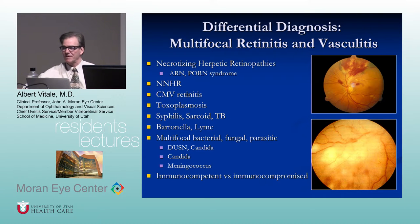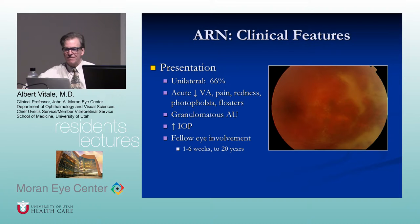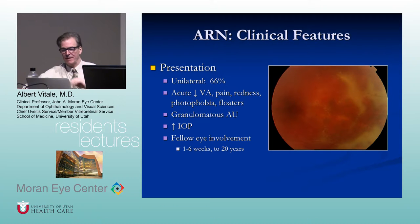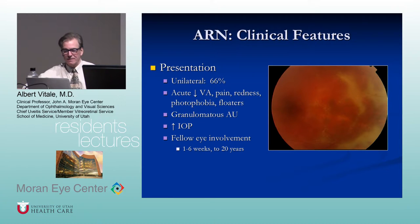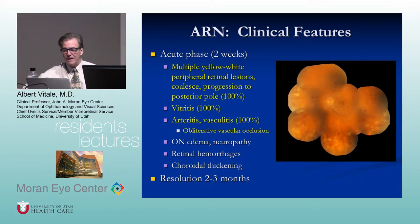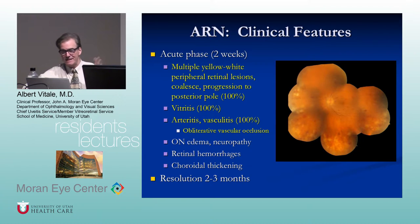Clinical features of ARN: it usually presents two-thirds of the time unilaterally but can be bilateral (so-called BARN). Patients present with acute decrease in vision, pain, photophobia, floaters, elevated intraocular pressure, herpetic hypertensive uveitis, and granulomatous uveitis. The fellow eye can be involved in one to six weeks, or up to 20 years has been described. In the acute phase, there are multiple yellow-white dots in the periphery — thumbprints — that coalesce rapidly within days and progress centripetally to the posterior pole.